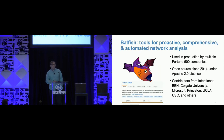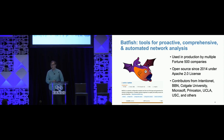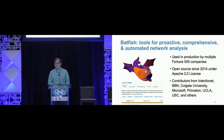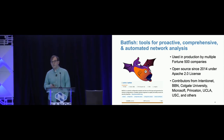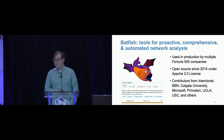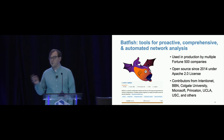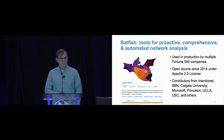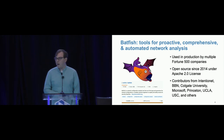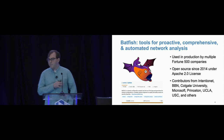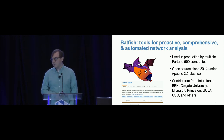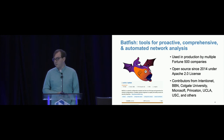The project that powers all of the stuff I'll be talking about is called Batfish. It's a suite of tools for proactive, comprehensive, and automated network analysis. It's an open source project under the Apache 2 license, which means all of you can try it out. It's used in production by multiple Fortune 500 companies, and its contributors include Intentionet, the company I work for, plus a bunch of other organizations making real changes to the code for their own uses.